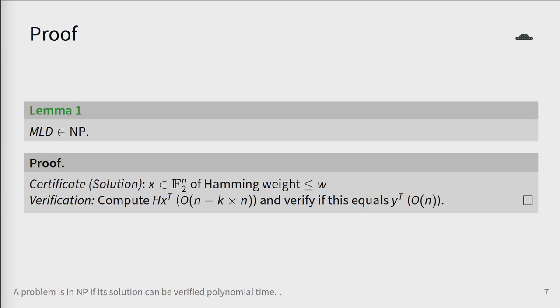A certificate for MLD is given by a vector of Hamming weight less than or equal to w. We can verify this by simply multiplying it by H on the left and verifying if it equals Y. Both of these steps can be completed in polynomial time as shown here.